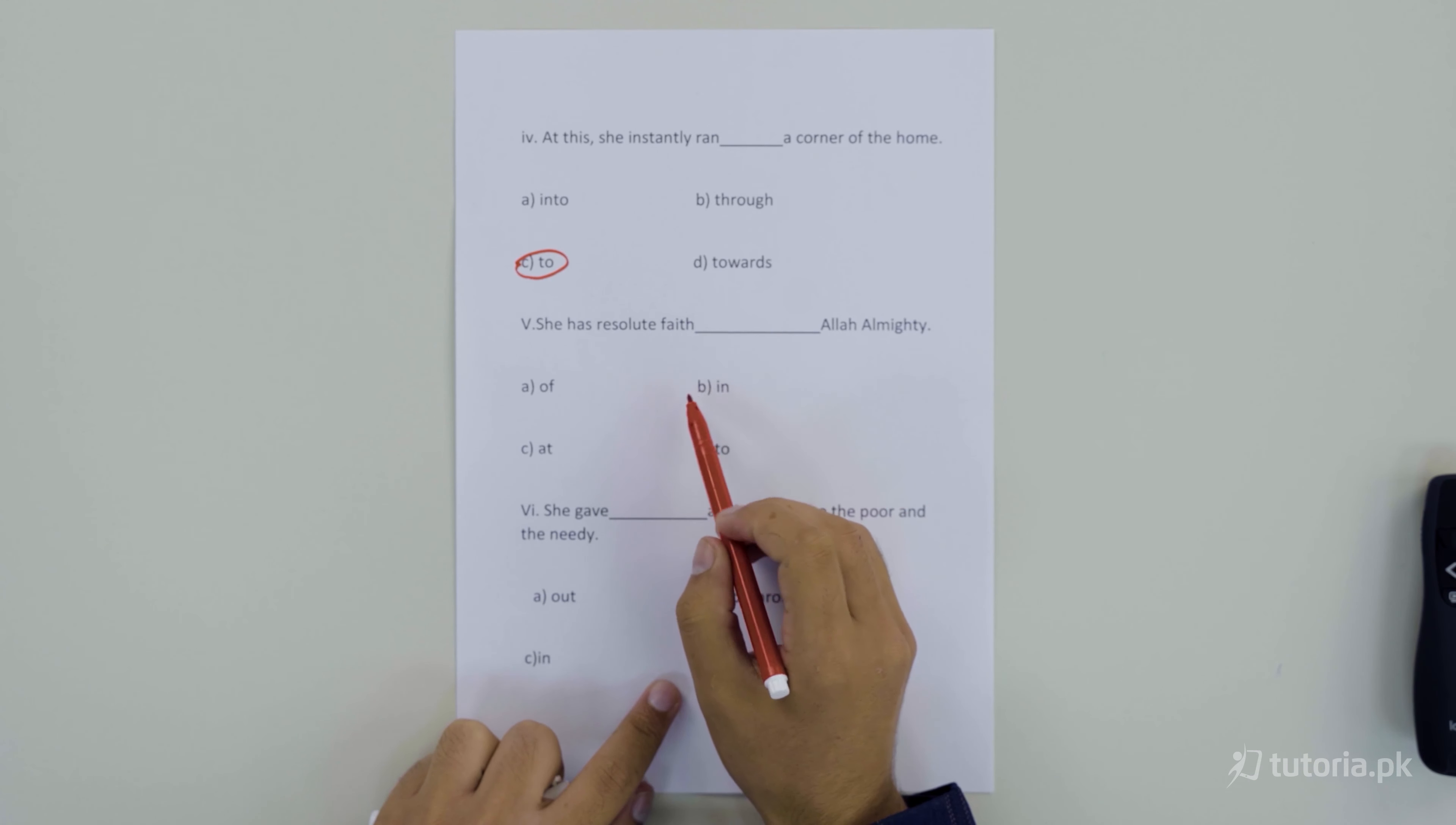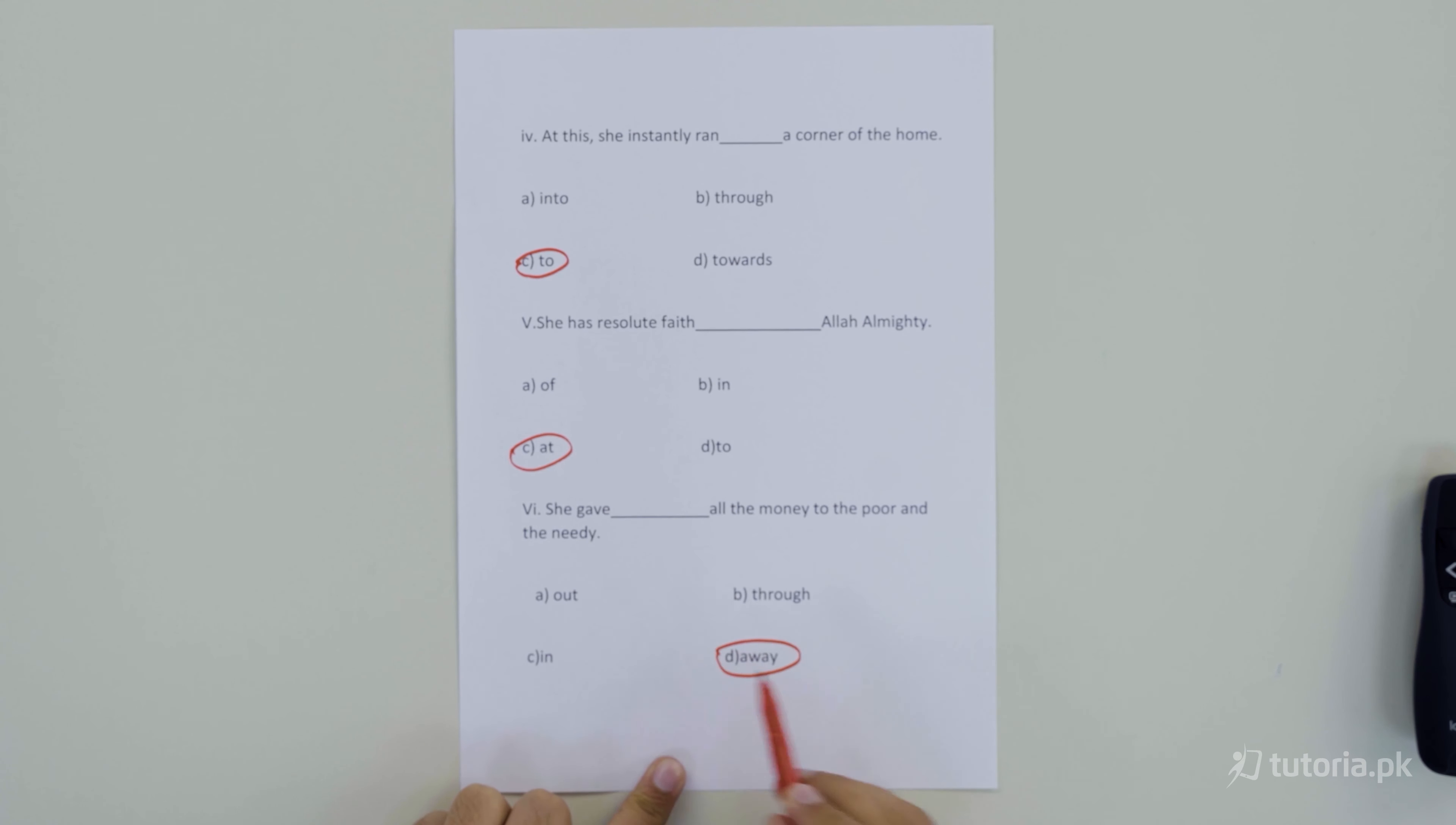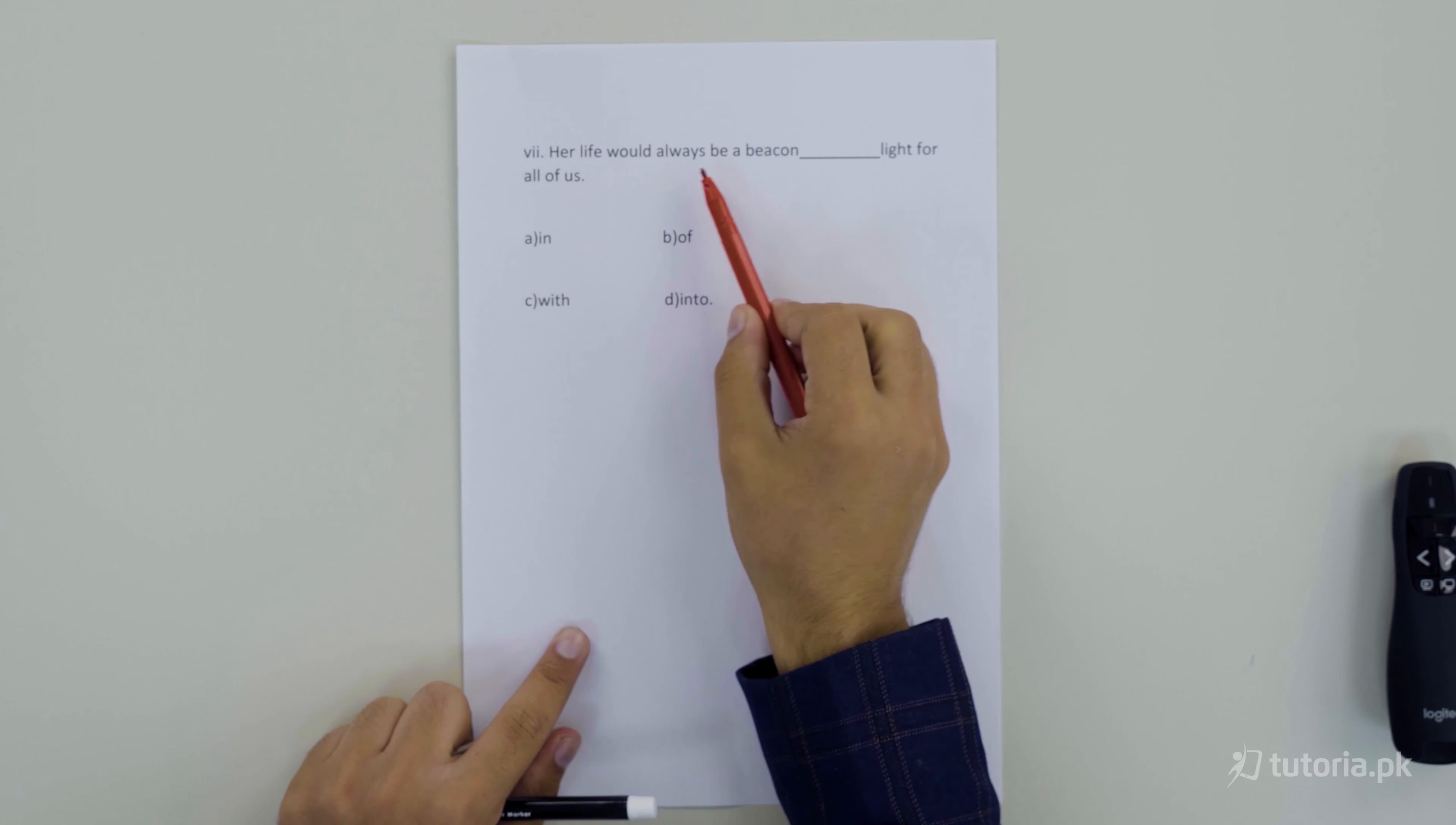She gave [blank] all the money to the poor and needy. She gave away all the money to the poor and needy. And the last one is: Her life would always be a beacon [blank] light for all of us. A beacon of light for all of us.